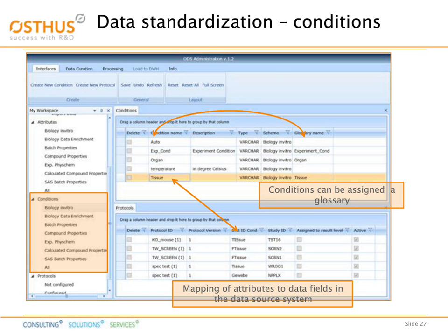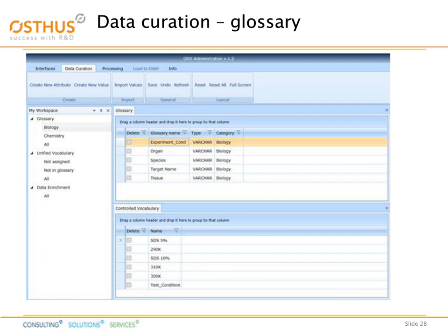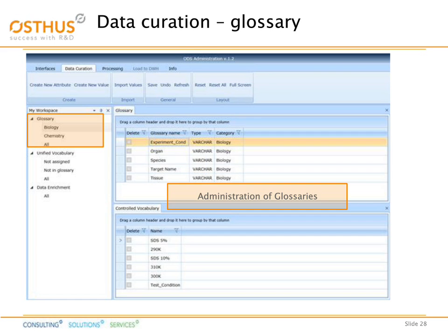In the ODS itself, on the next slide, we have the option to maintain a glossary. A glossary is a set of definitions and terms. On the left-hand side, we have different glossaries available, referring to biology and chemistry, as well as overarching glossaries. The ODS administrator helps the data steward or end user in administrating these terms in the glossary — he can group them, overwrite them, or neglect them. All of this is possible in this type of application.